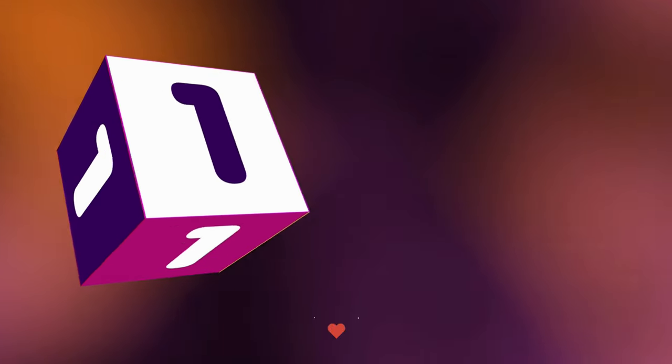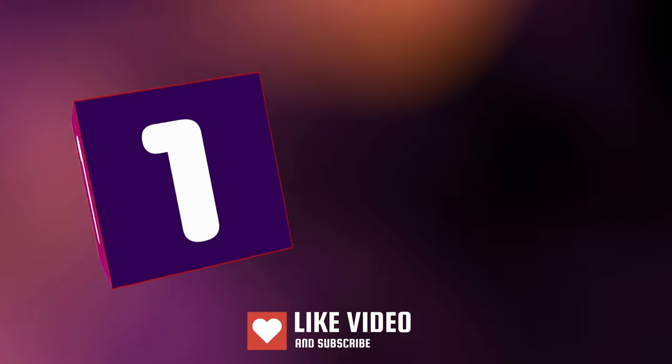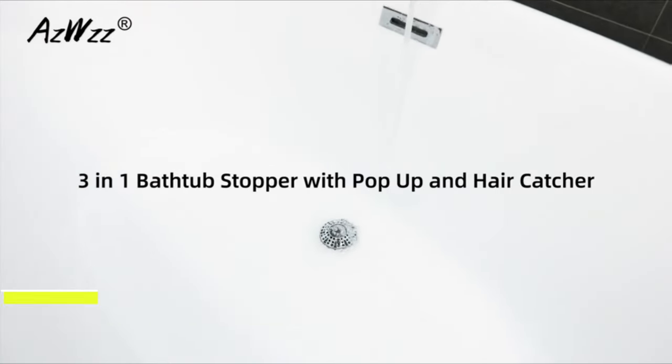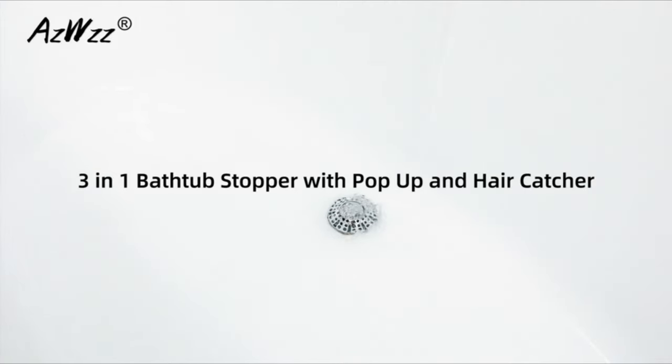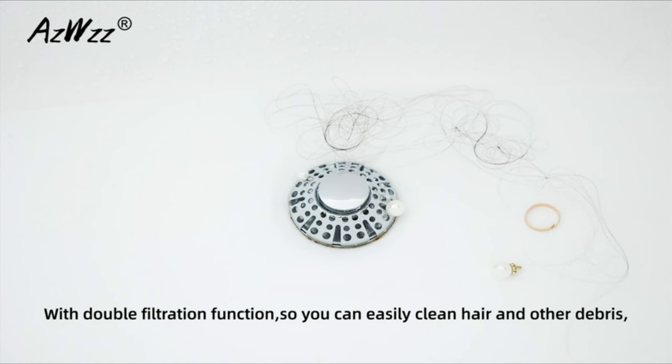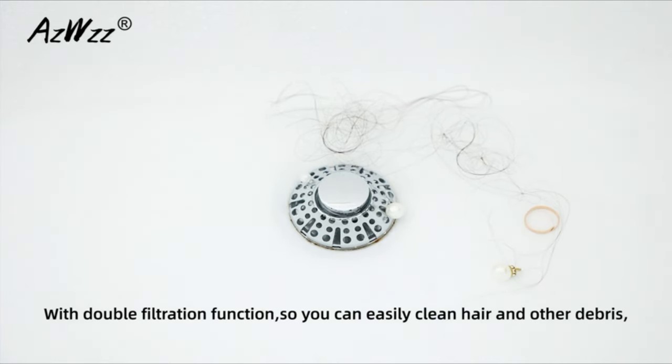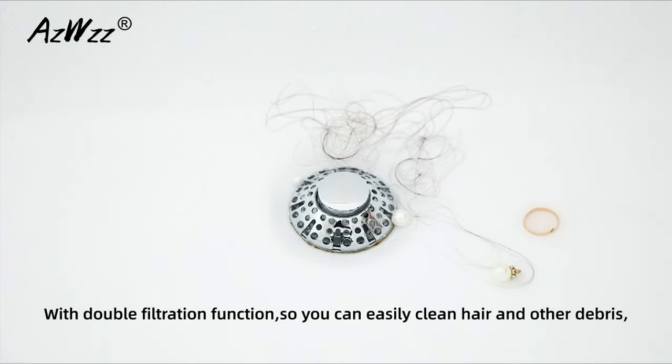Number 1. This bathtub drain stopper is easy and quick to replace by simply removing the old Oz WZZ bathtub drain cover lift and turn, tiptoe and trip lever drains and inserting bathroom tub drain stopper into the drain hole to complete the installation.